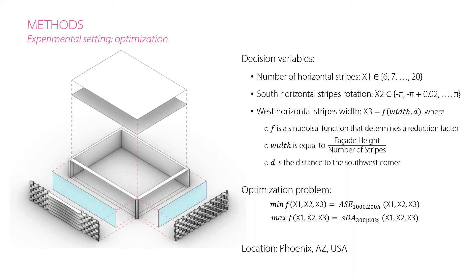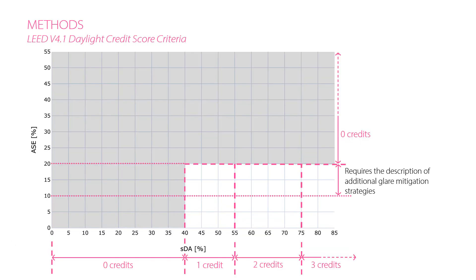The optimization aims to minimize the annual sun exposure and maximize spatial daylight autonomy under the annual clear sky of Phoenix, Arizona. LEED version 4 uses those two daylight metrics in its daylight credit system. Here in this graph, we can see how LEED gives different daylight credits based on spatial daylight autonomy and annual sun exposure values.